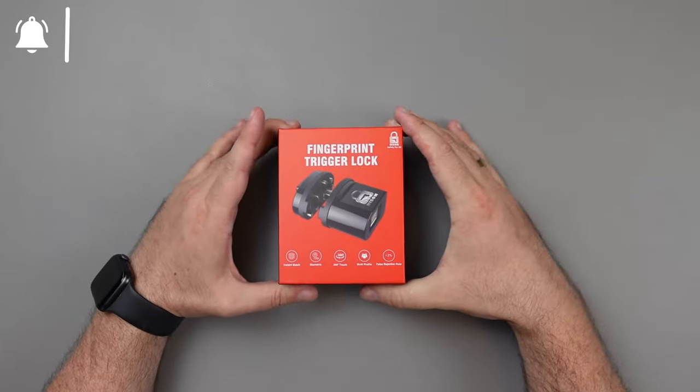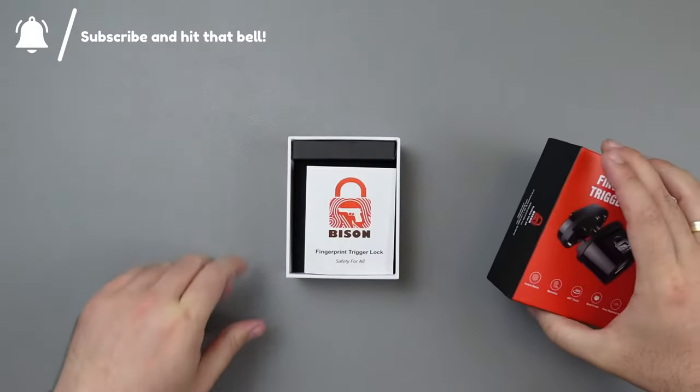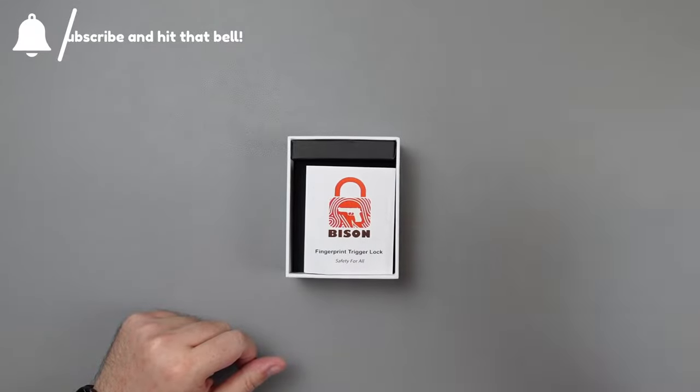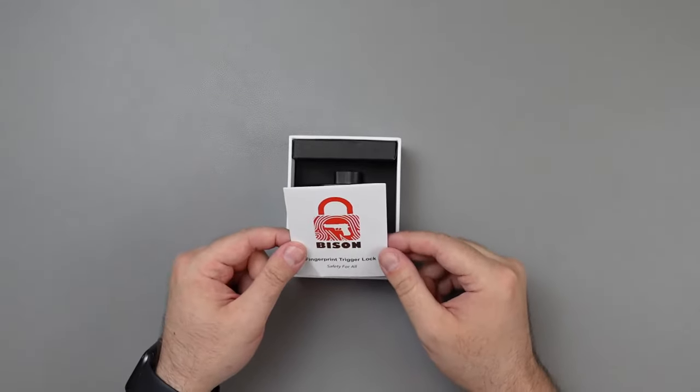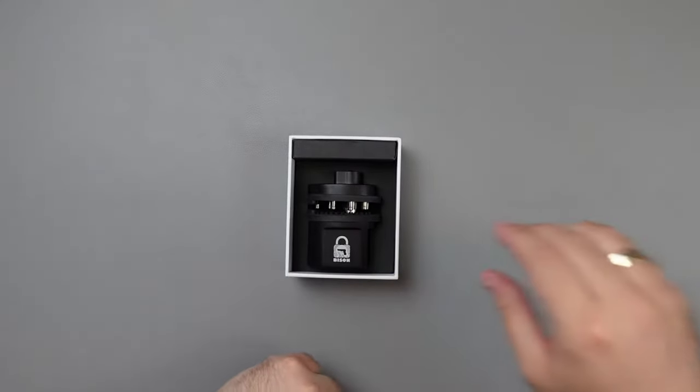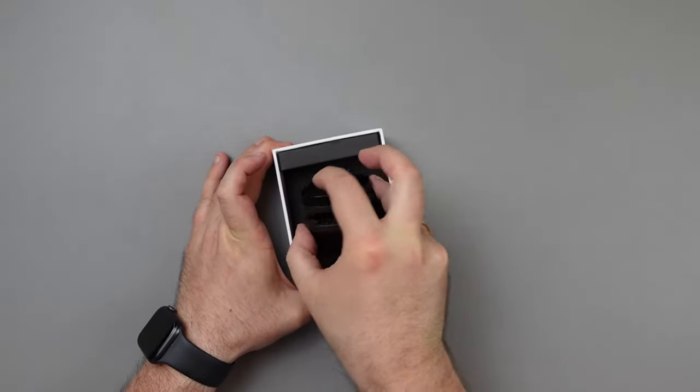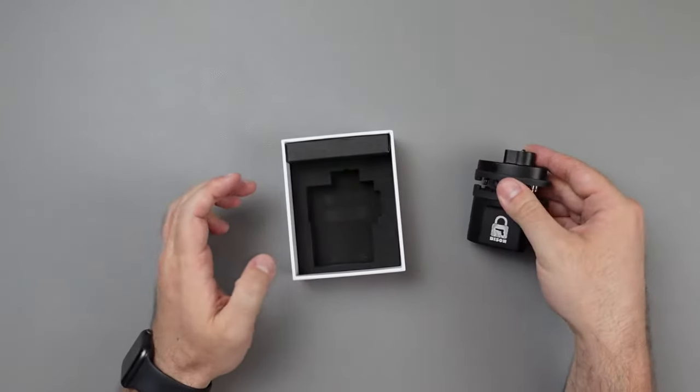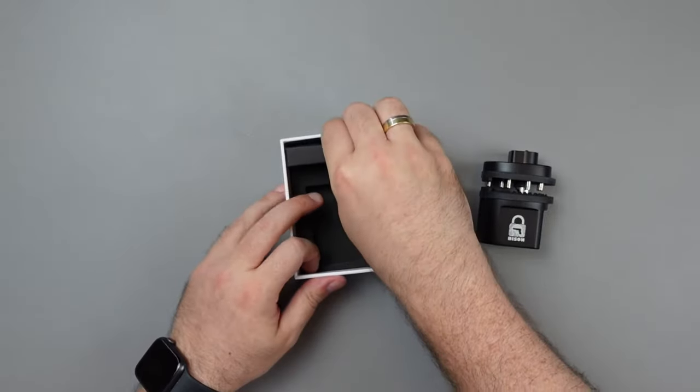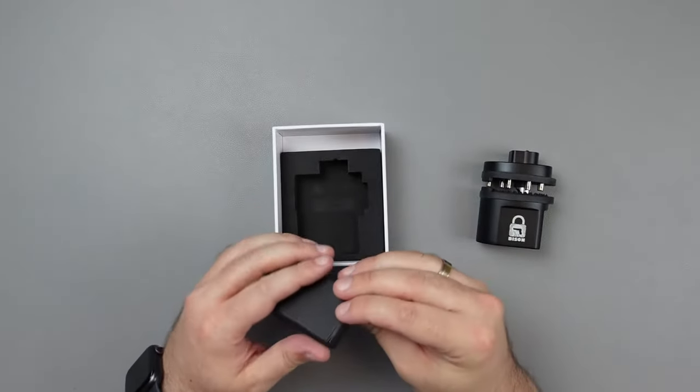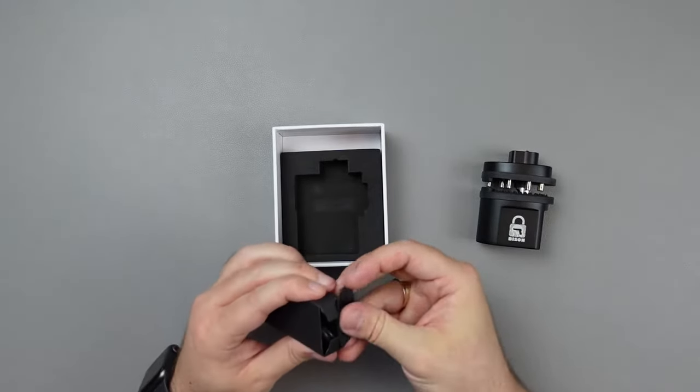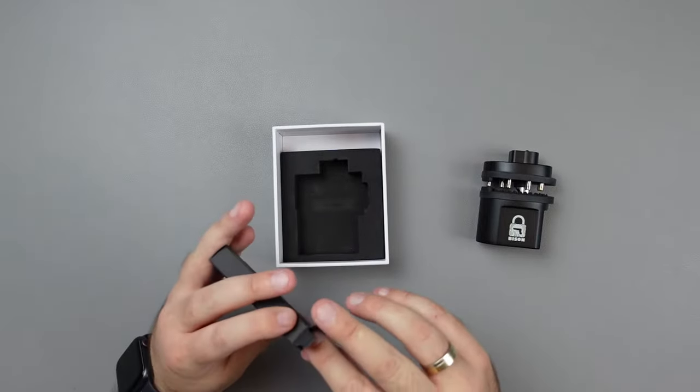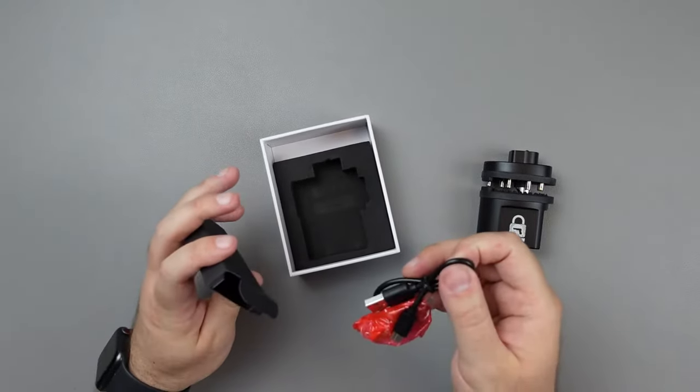Let's have a look at what comes in the box. The manual, and in this case I would say a very useful one with decent both illustrated and written instructions. The fingerprint trigger lock right off the box, it has some weight to it, and the physical key together with the micro USB charging cable stashed in the little black box.